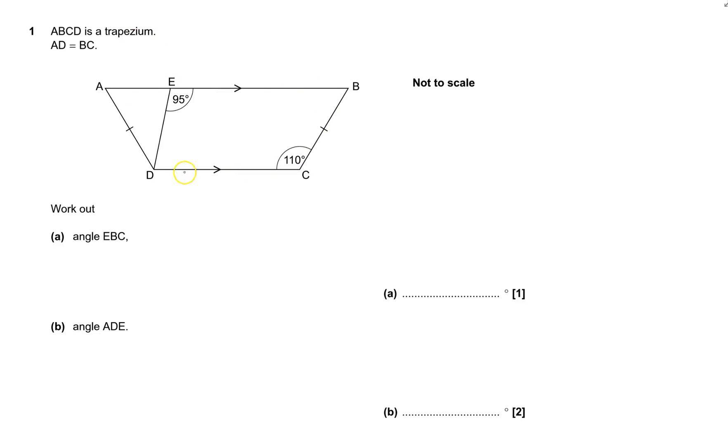ABCD is a trapezium, and AD equals BC, so this side equals this side. So it's an isosceles trapezium.